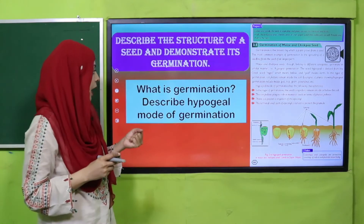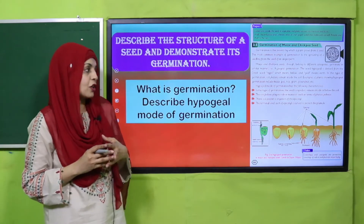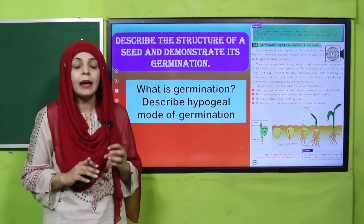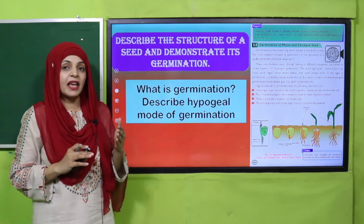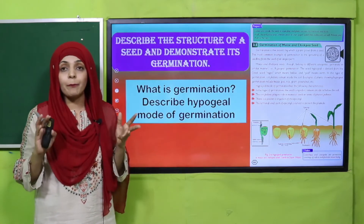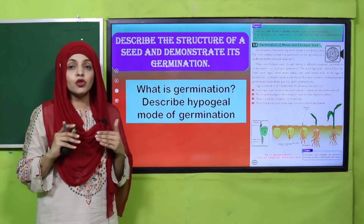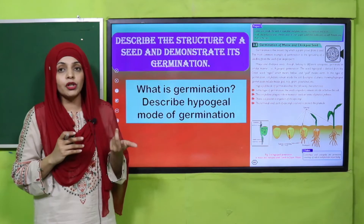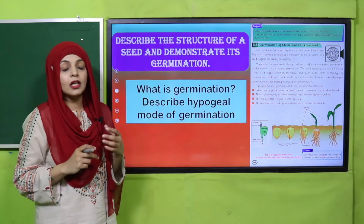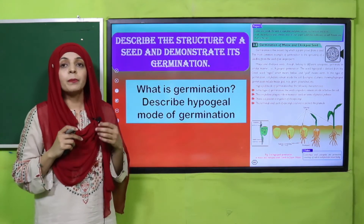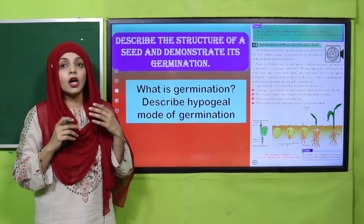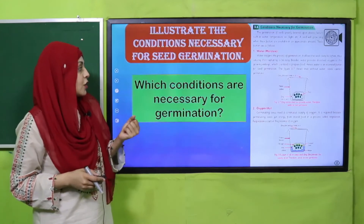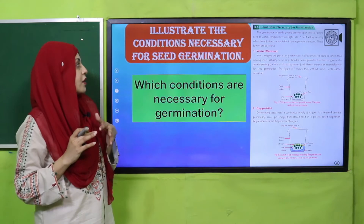In the next lecture we discussed germination: what is germination, and described the hypogeal mode of germination. Both monocots and dicots — maize and chickpea — have different structures, but both germinate by the hypogeal mode of germination. Hypogeal means that the cotyledon or seed remains underground — that is called hypogeal germination. The radicle makes up the roots; the plumule and epicotyle make up the shoots and the first leaves of the plant after germination.